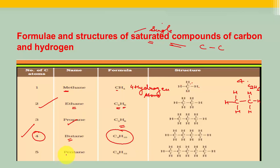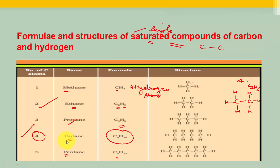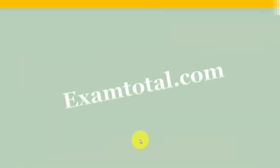Then pentane — from the name itself we can tell it has five carbon atoms and twelve hydrogen atoms, as you can see in the structure. So now we know about the various formulas and structures of saturated compounds. What is the need for naming of hydrocarbons and carbon compounds?